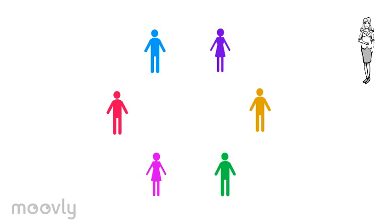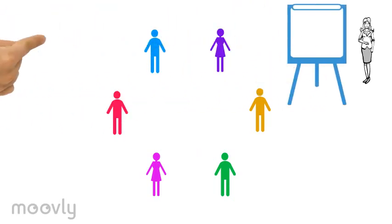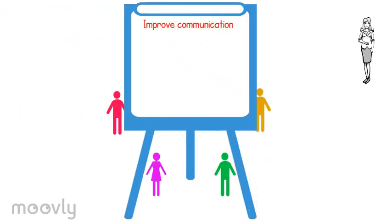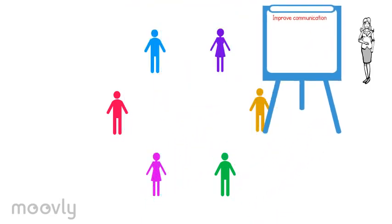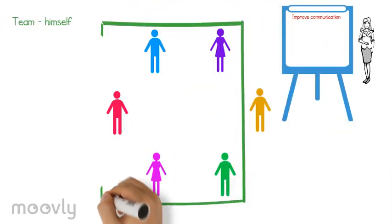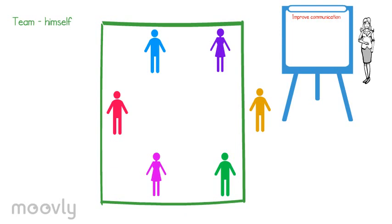Now the trainer writes these points of improvement on the whiteboard. Now the participant shares what he would like to improve in the team, himself excluded. In the team, myself excluded, I would like everyone to work more neatly. I always try to clean up neatly and I get the impression the rest isn't on the same page.